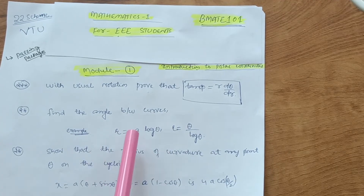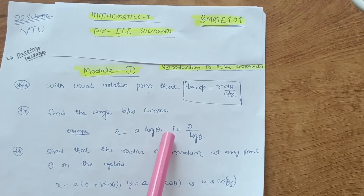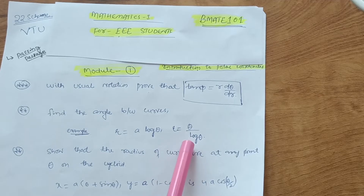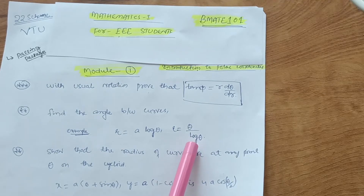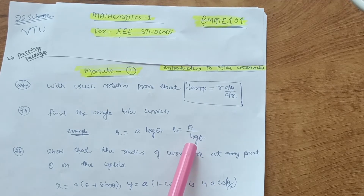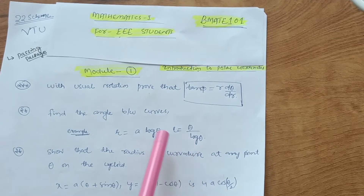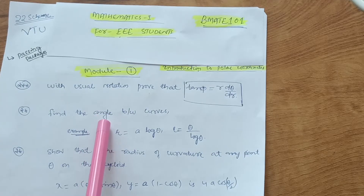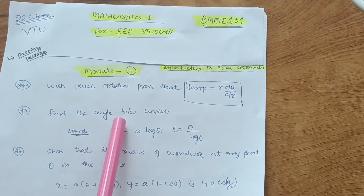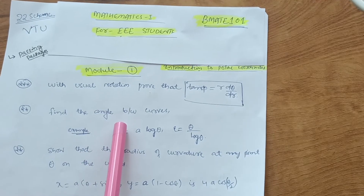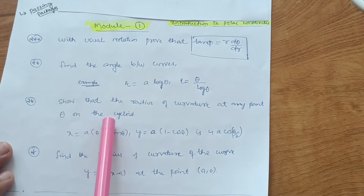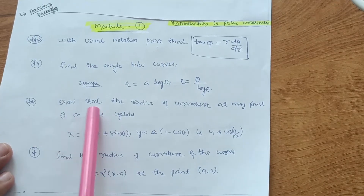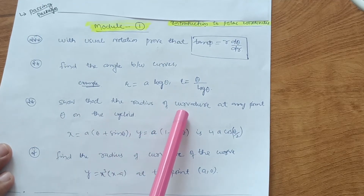The next topic is finding the angle between curves. For example: r equals a·log(θ) and r equals θ/log(θ). Just try three to four problems of this type so that you can cover the angle between curves topic.